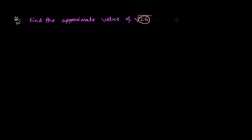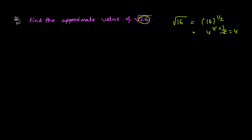For example, 16 is a perfect square number and √16 means 16 to the power 1/2. Since 16 = 4², raising it to 1/2 gives 4 — very easy. But 26 is not a perfect square number, so we have to do a lot more work to find its square root.